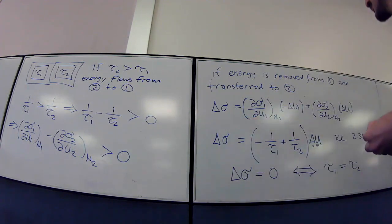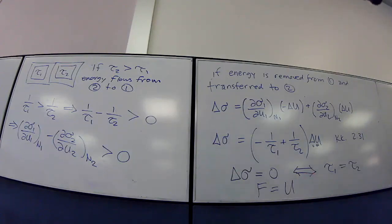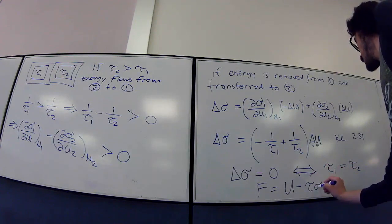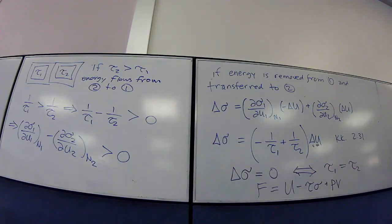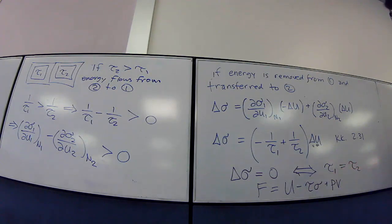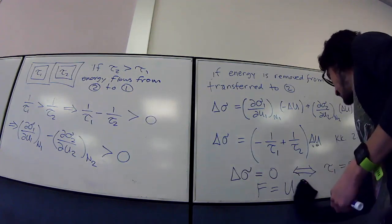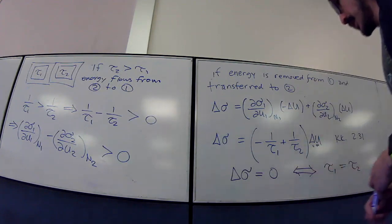The free energy is F = U − τσ (or U − TS) plus pressure times volume. These variables always appear together — temperature and entropy are conjugate, as are pressure and volume. When you change volume, pressure changes; when you change pressure, volume changes. That's why both appear in the free energy.